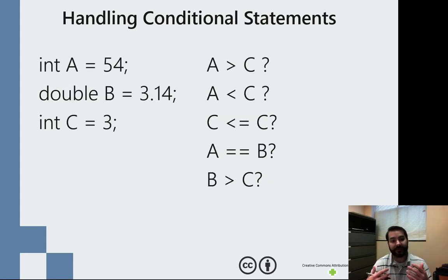And so what this allows us to do is actually produce Boolean expressions, conditional statements. So if we take, for example, our three lines of code, I have an integer A, I have a double B, and I have an integer C. And then I've got a few different conditional statements on the right.